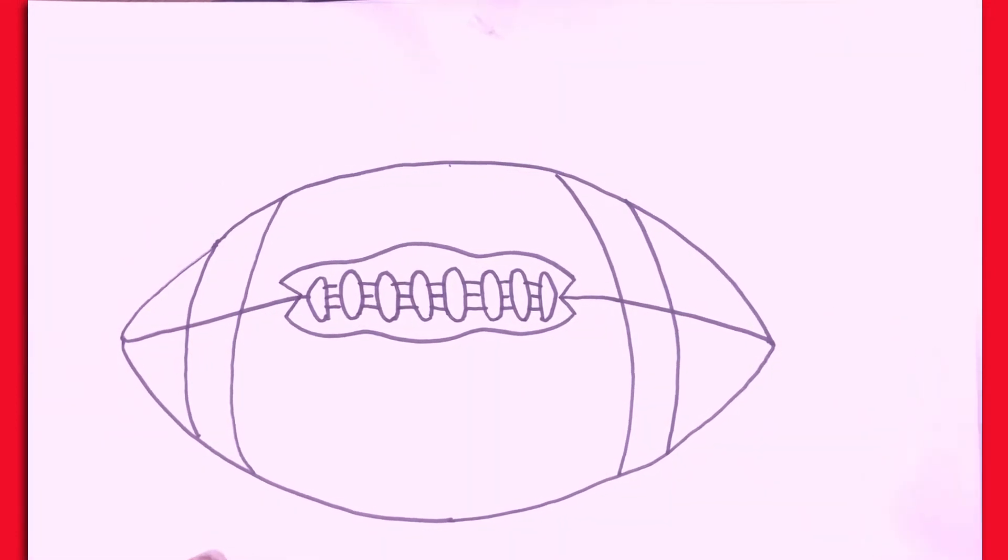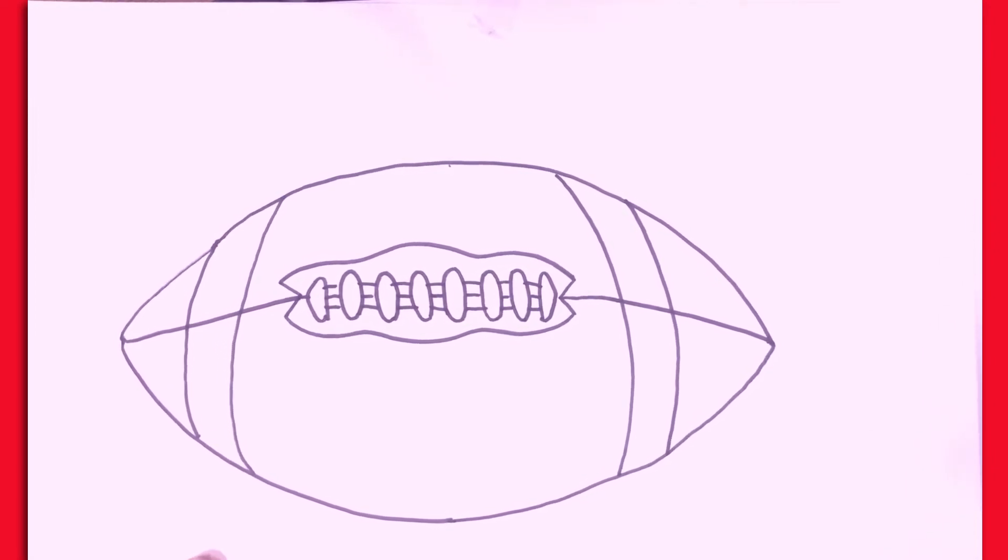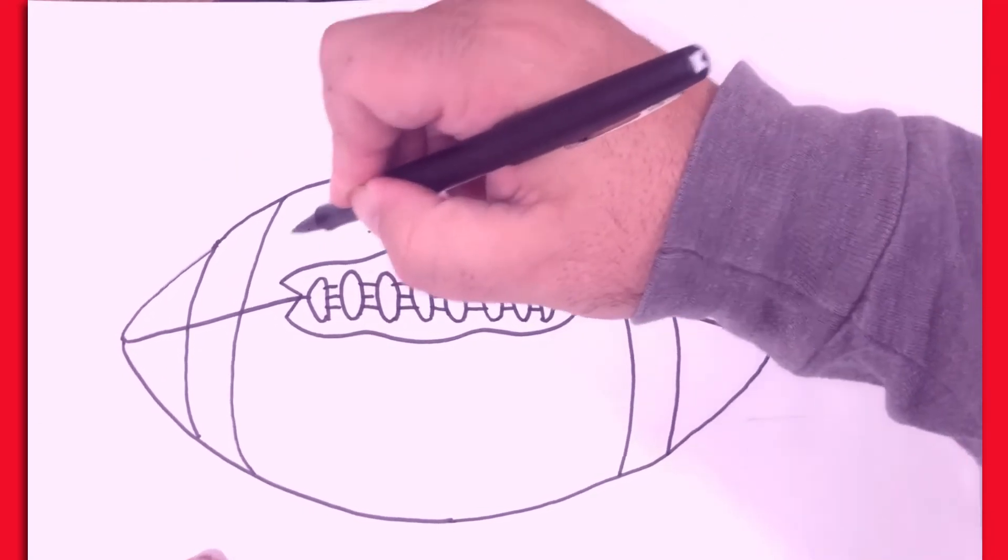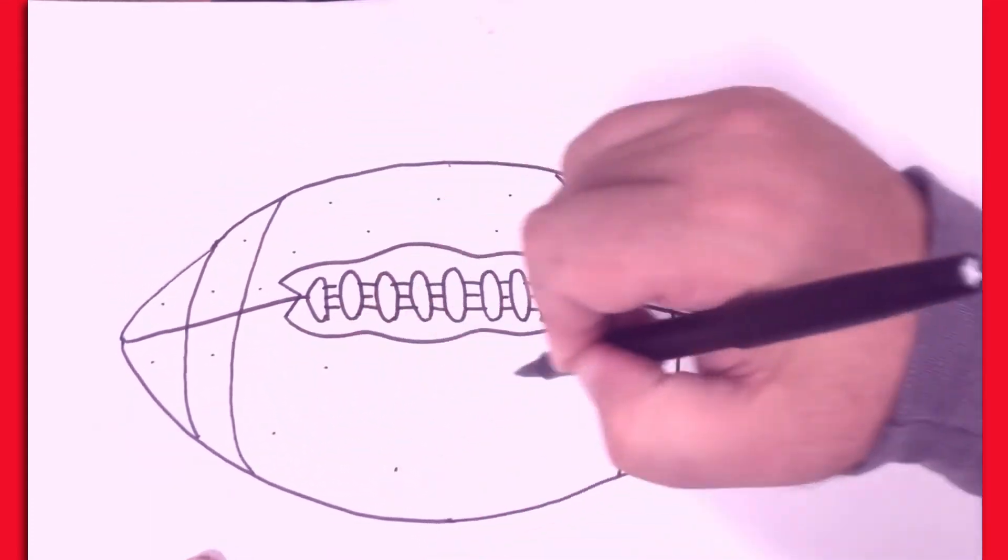For my next step, I'm going to add a little bit of texture. If you look carefully at a football or you hold one, you'll notice that it has really tiny bumps to give you a little bit of grip. And so I'm going to scatter some of these little dots to show where those bumps are.